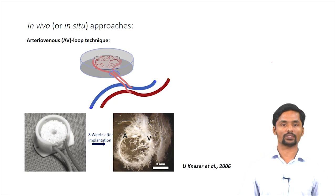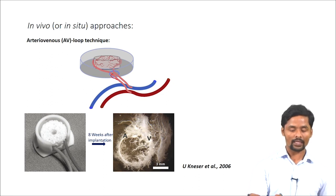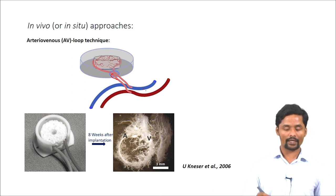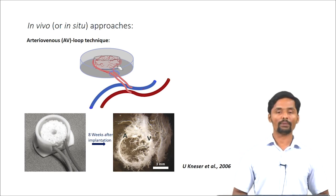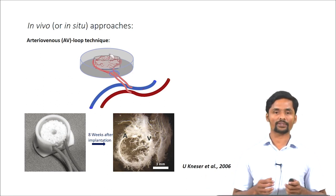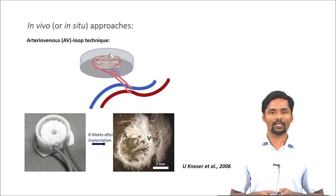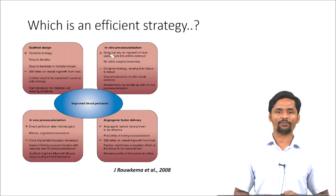The in vivo approach involves a technique called arteriovenous loop formation. A synthetic vessel is surgically connected to an artery and vein, and this setup is implanted in vivo with the synthetic vessel looped inside the scaffold. Over a period of time, capillaries sprout into the scaffold. Once sprouting occurs, the scaffold is surgically removed and implanted at the site of interest, thereby achieving vascularization in the scaffold — an efficient strategy.